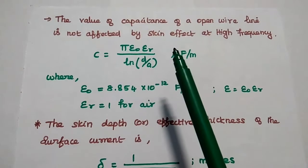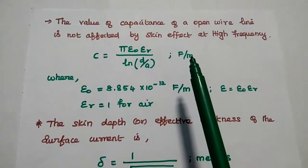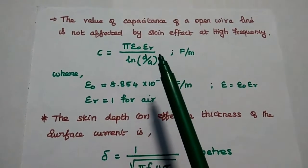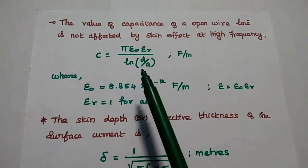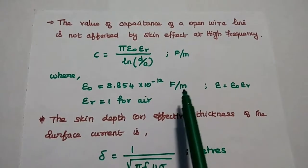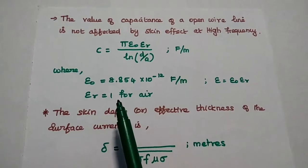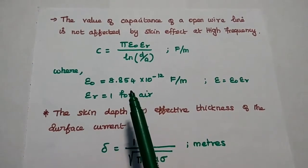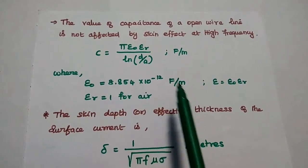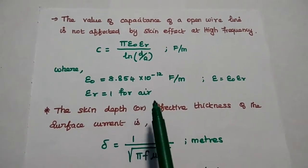For the open wire line, the value of capacitance is not affected by the skin effect. Its value is C = (pi * epsilon_0 * epsilon_r) / ln(D/A), with units of Farad per meter. Here, epsilon_0 is the permittivity equal to 8.854 × 10^{-12} Farad per meter.